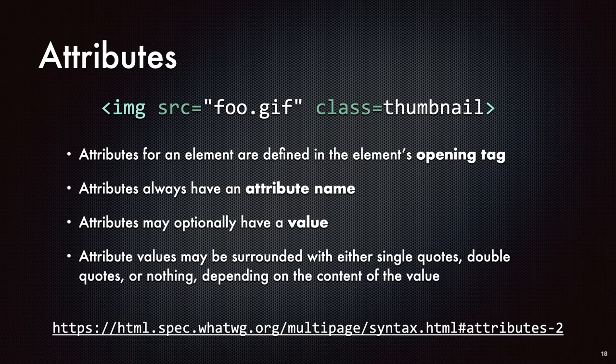There's an alt attribute within the image element that describes visually what the image is for anyone with accessibility concerns. Since descriptions for images typically involve more than one word and spaces, you would need to have that alt attribute value surrounded with quotes.